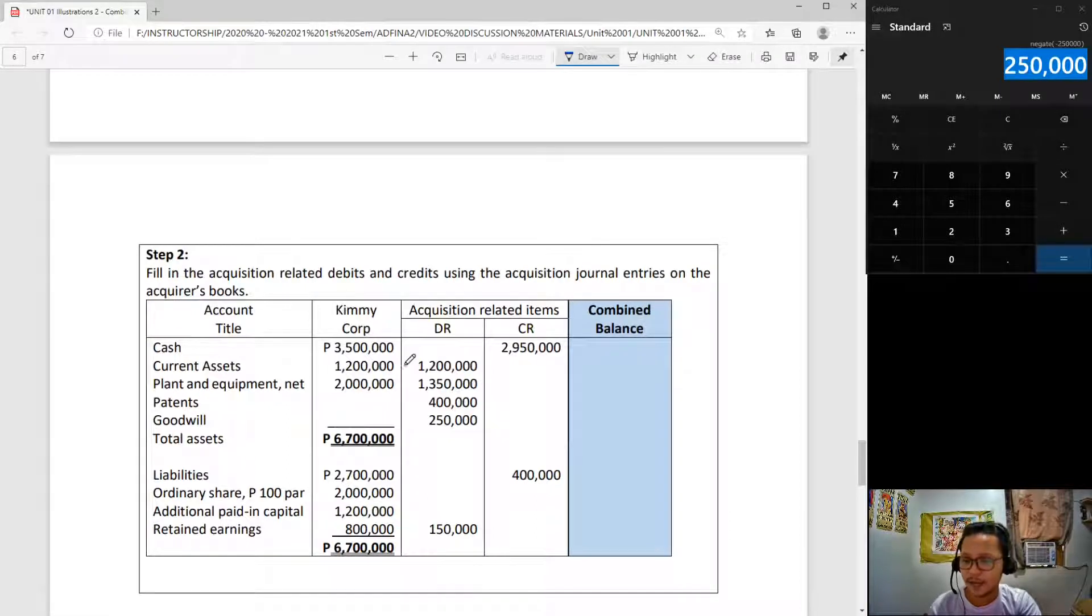There is a total credit of 2,950,000 to cash. There are debits to current assets of 1,200,000, which is the fair value of Granger's current assets. Plant and equipment 1,350,000 debit as well, patents 400,000, goodwill 250,000, liabilities credited for 400,000, and there is a debit to retained earnings of 150,000. What is this? You guessed right, that is your business combination expense.